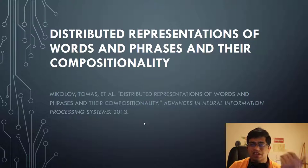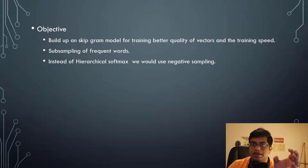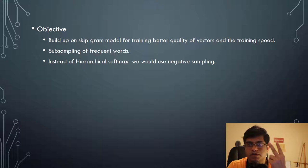The paper's titled distributed representations of words and phrases and their compositionality. The objective of the paper is to build up on the Skip-Gram model for training better quality of vectors and the training speed. We do that through two different methods: first is we subsample the frequent words like 'and' and 'the', and second, instead of using the hierarchical softmax which we discussed in the last paper, we will be using something new called negative sampling.